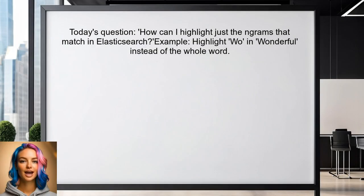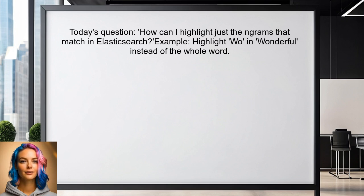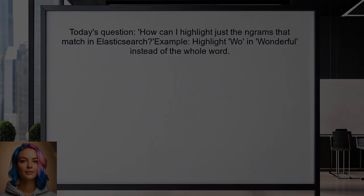Here's the specific question we're addressing today. One user asked: how can I highlight just the NGrams that match in Elasticsearch? They provided an example where they wanted to highlight only WOAH in the word WONDERFUL, but instead the entire word was highlighted. Sound familiar? Let's dive into this together.